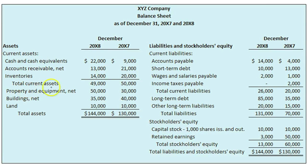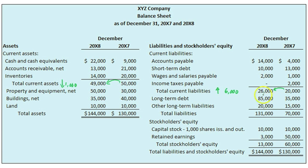XYZ's current assets stayed about the same, only decreasing by $1,000 from last year's $50,000 to this year's $49,000. However, its current liabilities increased $6,000 from last year's $20,000 to this year's $26,000. This trend has made XYZ less liquid because it has fewer current assets with which to pay off its current liabilities in the next year.